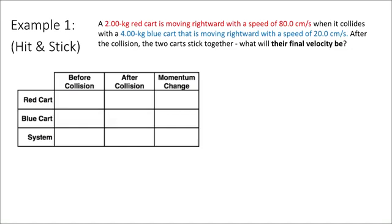For our first example, let's take a look at a type of collision which we would call perfectly inelastic, or a hit-and-stick collision. Let's say that we have a 2-kilogram red cart moving to the right with a speed of 80 centimeters per second when it collides with a 4-kilogram blue car moving to the right with a speed of 20 centimeters per second. After the collision, we're told that the two carts stick together, and we're asked to solve for their final velocity.